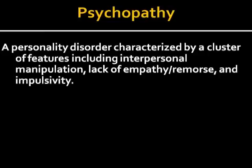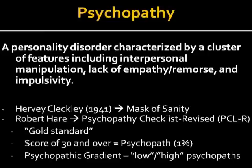The PCL-R is generally considered the gold standard when it comes to psychopathy. It is a scoring system or psychological assessment in which an individual receives a score from 0 to 40. If you receive a score of 30 or over, you are given the clinical or research label of psychopath.